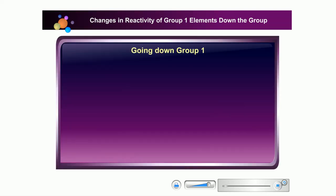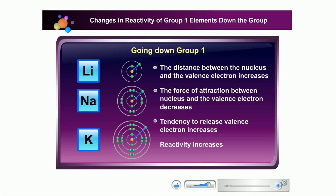As we go down the group, the valence electron is further from the nucleus. Moreover, the valence electron is also shielded by the inner negatively charged electrons.